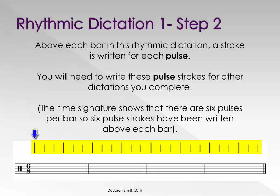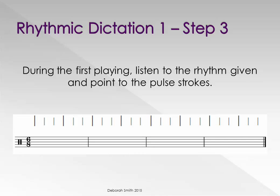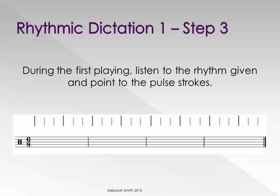Notice the first and fourth beat strokes are darker and longer — this is to show where the beats fall. During the first playing, listen to the rhythm given and point to the pulse strokes: one and a, two and a.